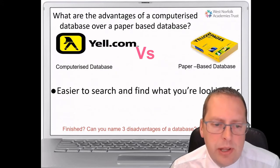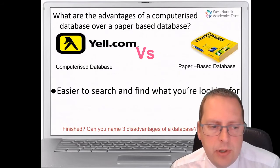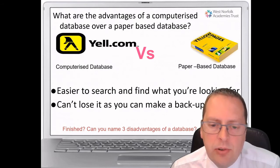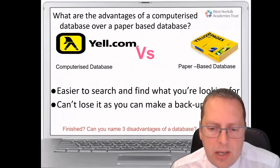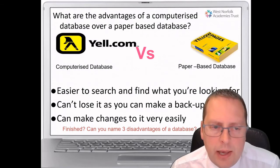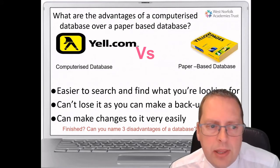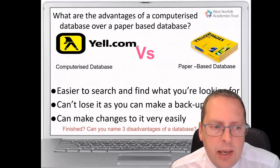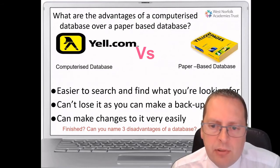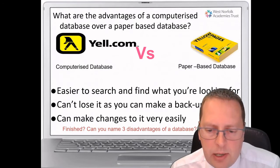We know that it's easy to search and find what you're looking for in a computer database. You can't lose that information — you can make a backup. And if something does change, such as an address or a phone number, it's very easy to update that in a computer database, and it's always up to date, as opposed to a paper-based database getting out of date very quickly.